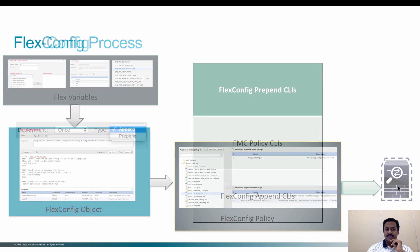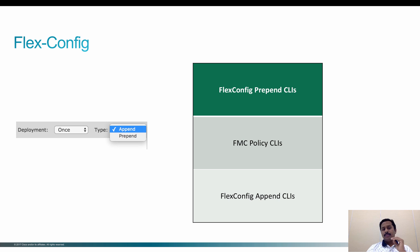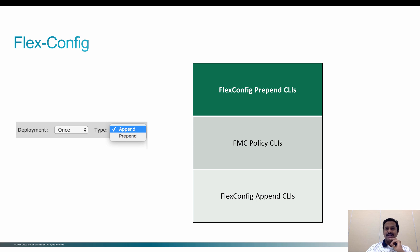Before we go into the demo, some key things to note: during deploy you have two options — append and prepend. What that means is, for a particular set of FlexConfig objects, you choose whether the generated CLIs are pushed before or after the FMC policy. For example, if you have used FMC to configure NAT policy or access control policy, those would generate a CLI configuration during deploy — those are handled by the FMC policy CLI bucket. Using FlexConfig, for example for PBR, you can push those CLIs before or after the FMC-generated policy.